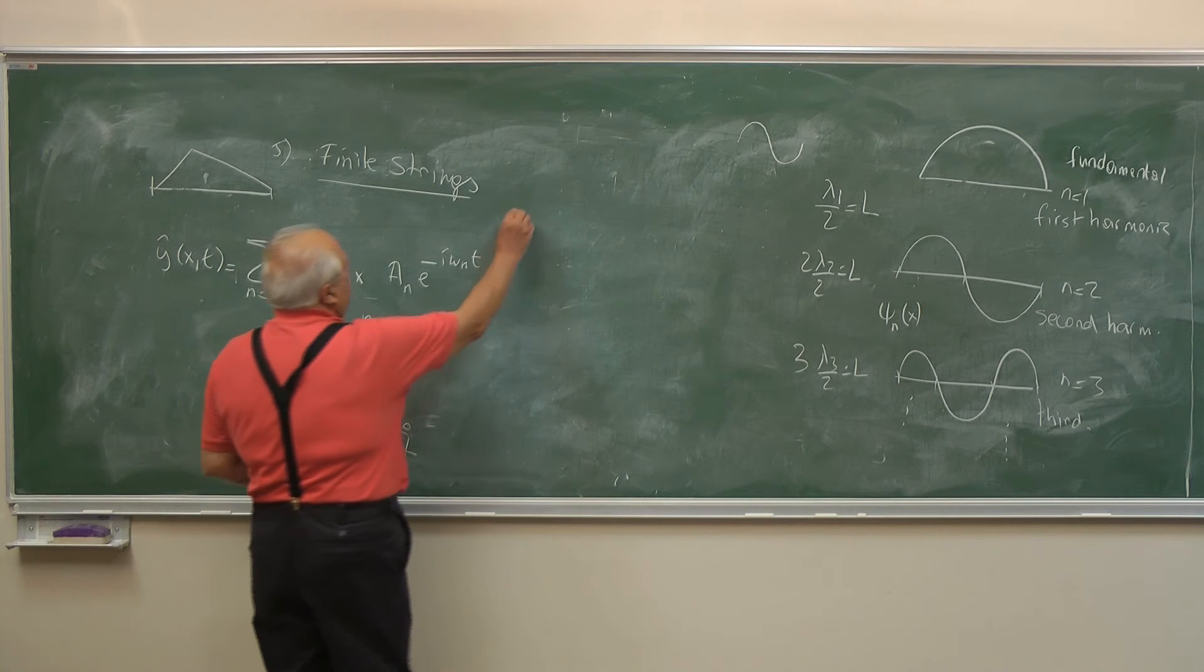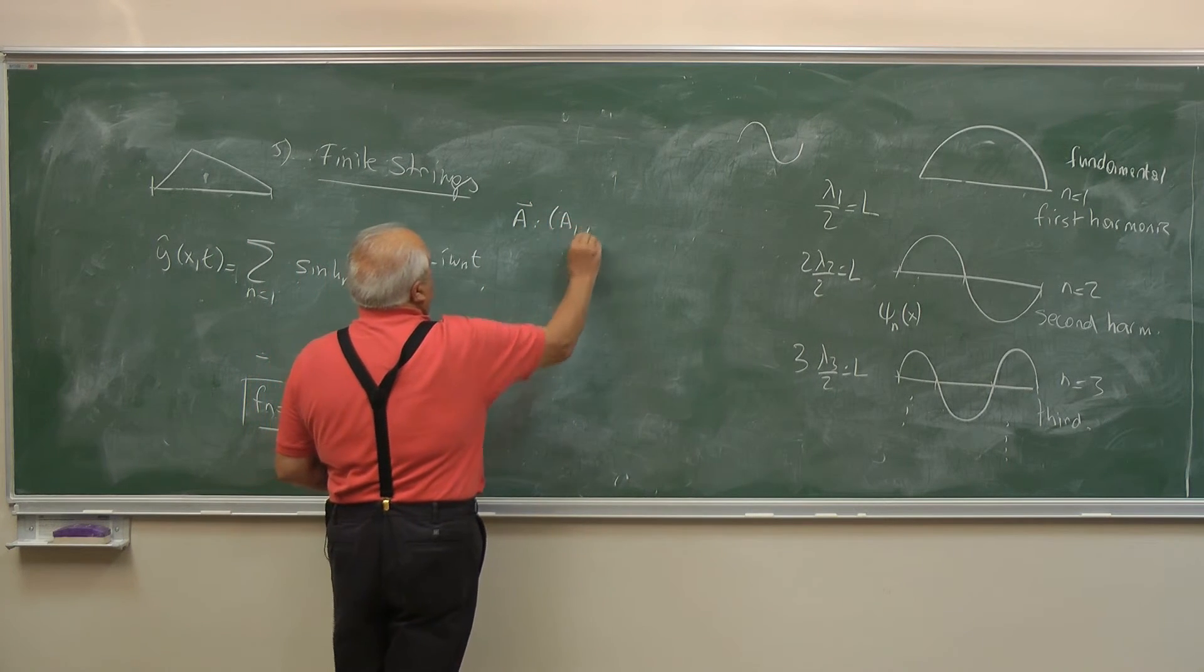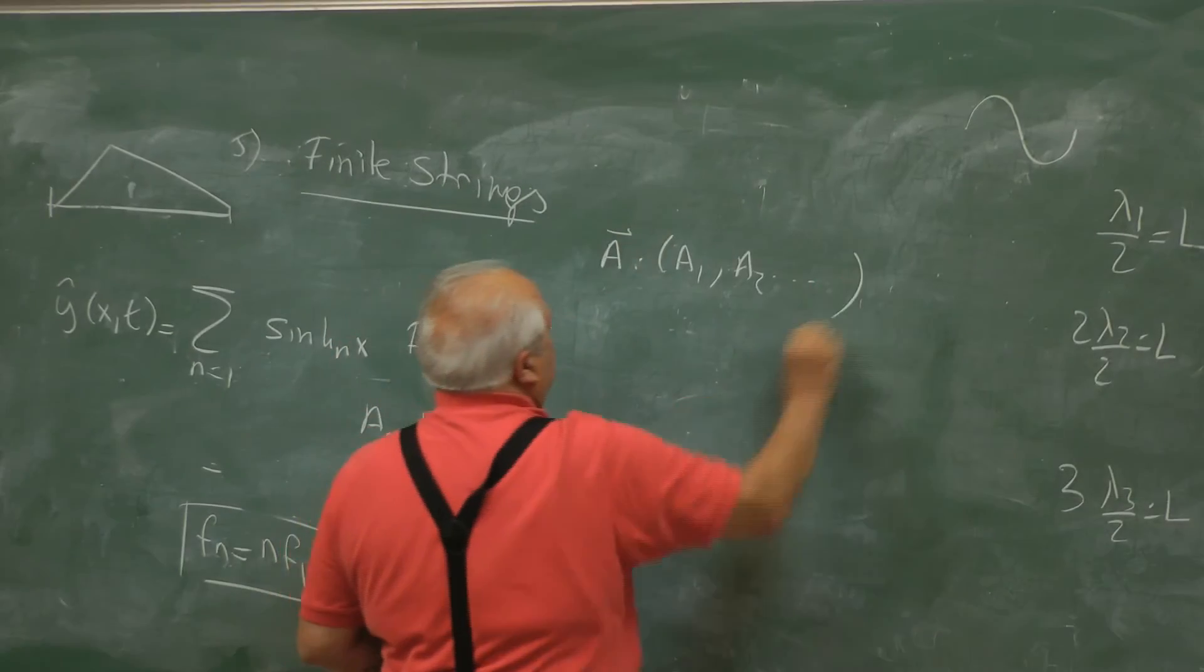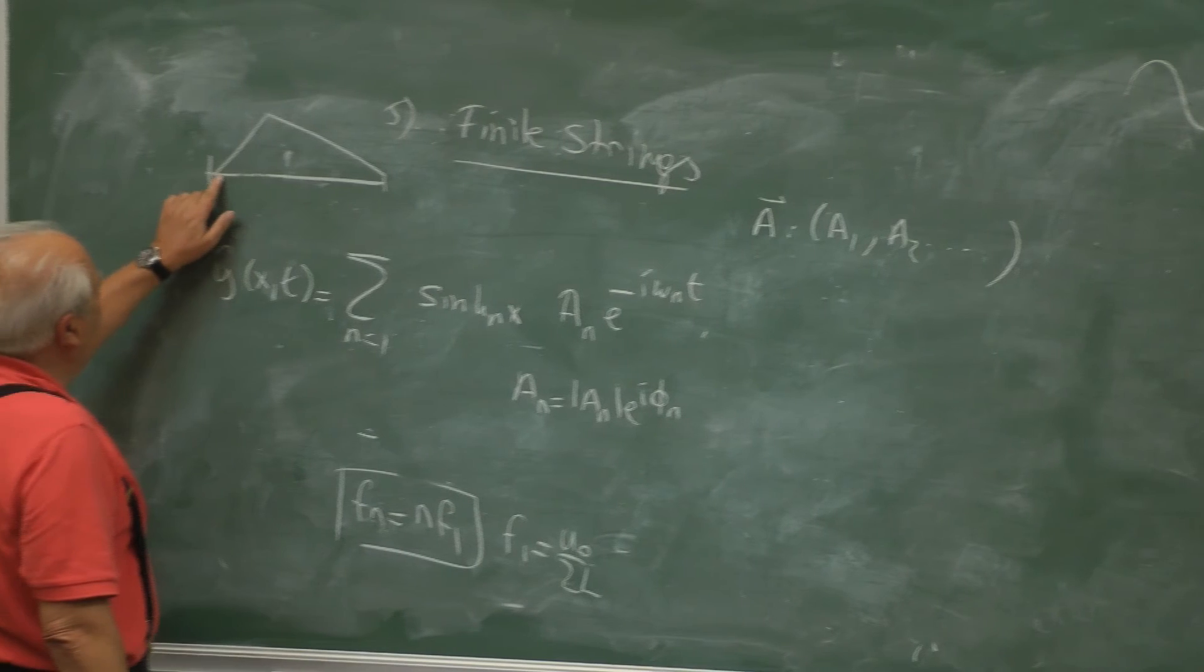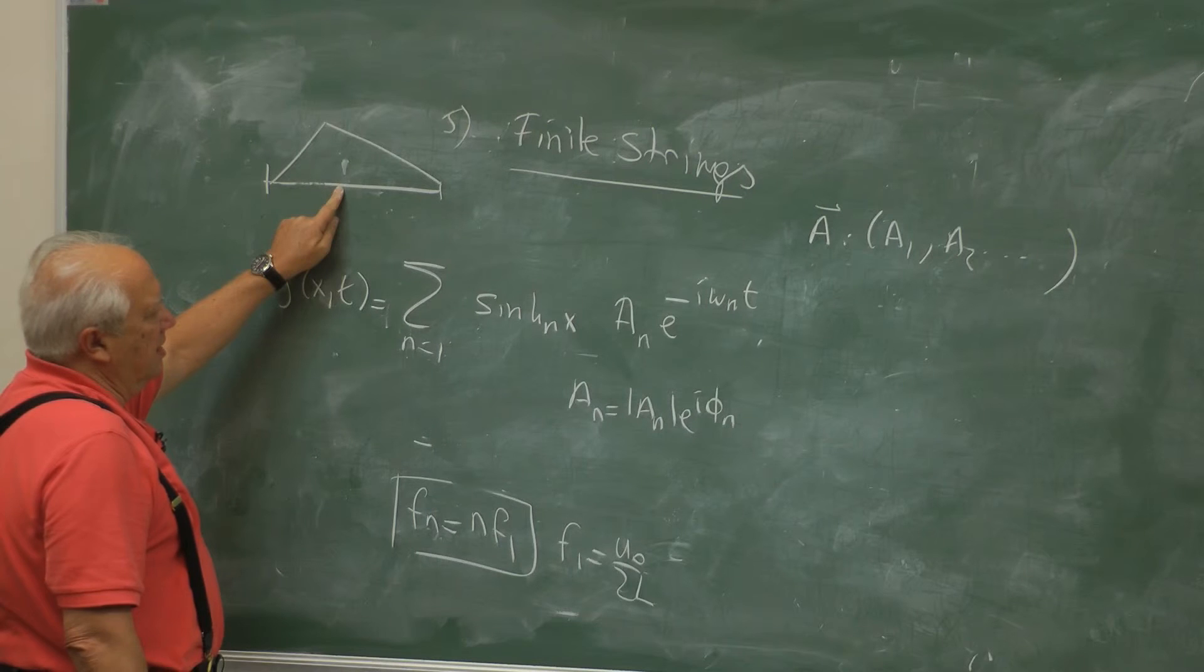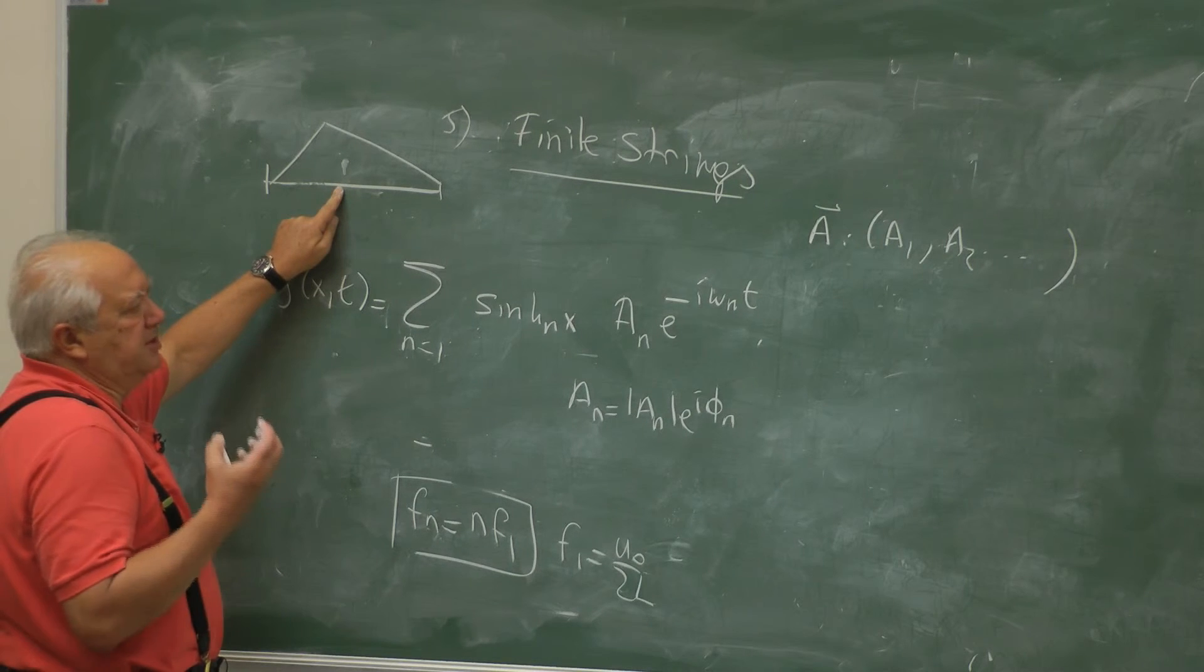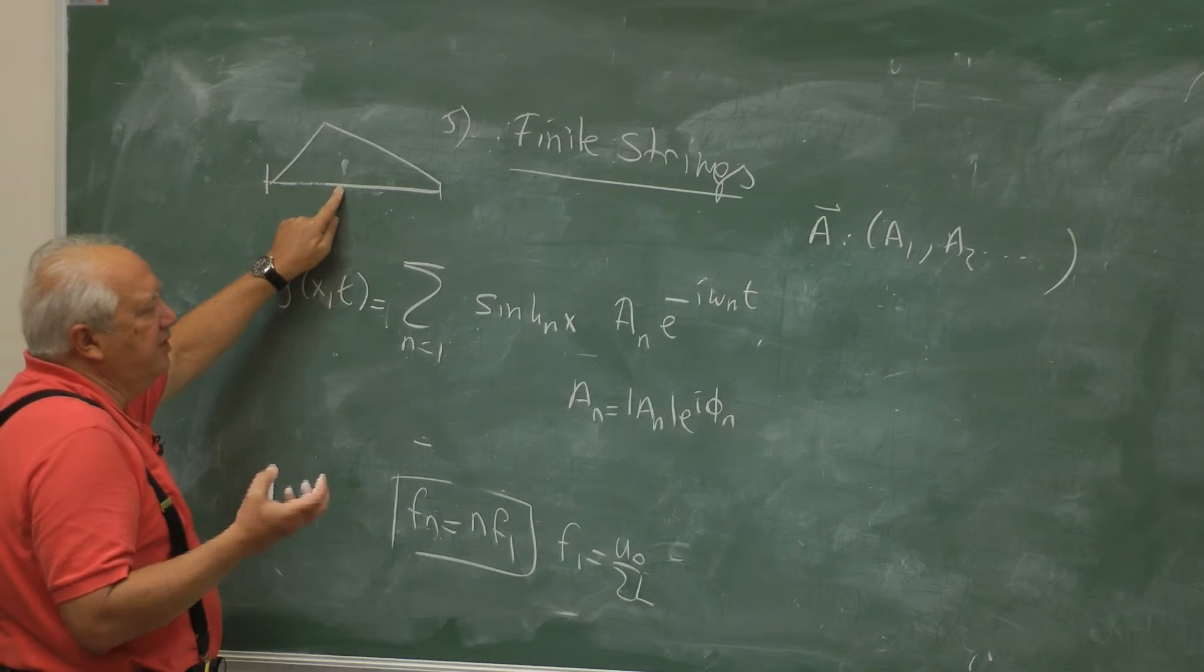So even though you play the same string, for example, let me consider these complex coefficients as a vector: A₁, A₂, etc. So for example, even if two guitarists play the same string, the timbre, what you hear, will be different. The taste of sound is different.